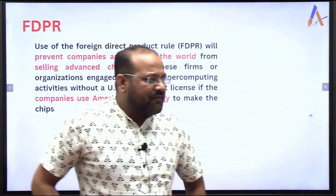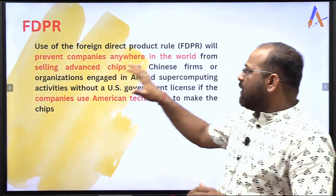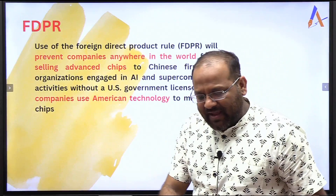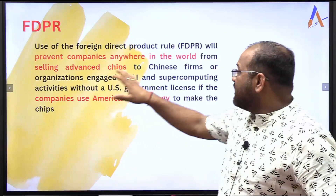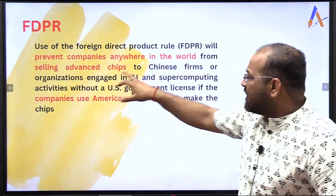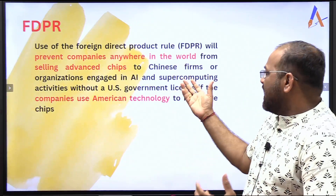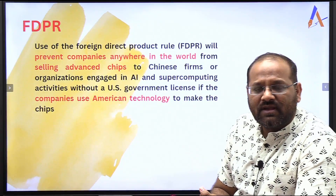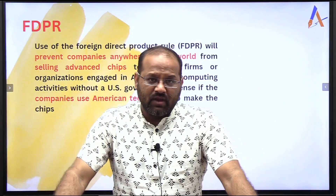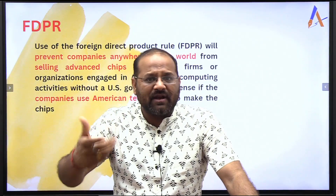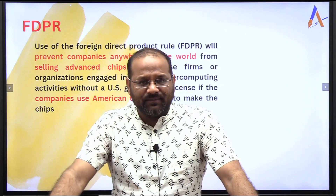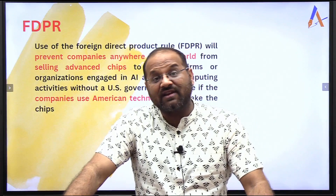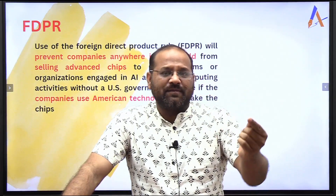The Foreign Direct Product Rule says it will prevent companies anywhere in the world — not just those working in China or the U.S. — from selling advanced chips to Chinese firms or organizations engaged in AI and supercomputing activities, without a U.S. government license, if those companies use American technology to make their chips. Essentially, any company globally producing semiconductors or chips that can be used in supercomputers, AI, or quantum computing cannot supply those to Chinese firms.